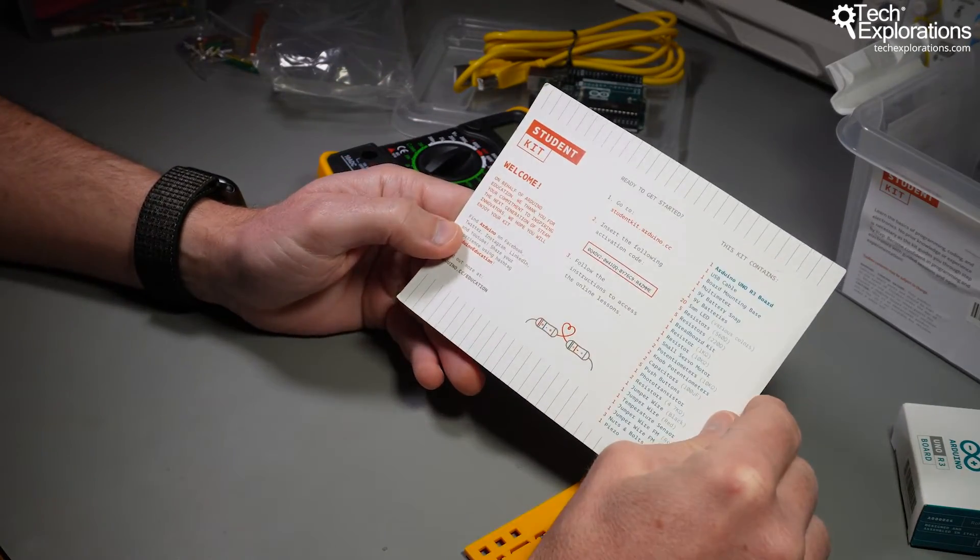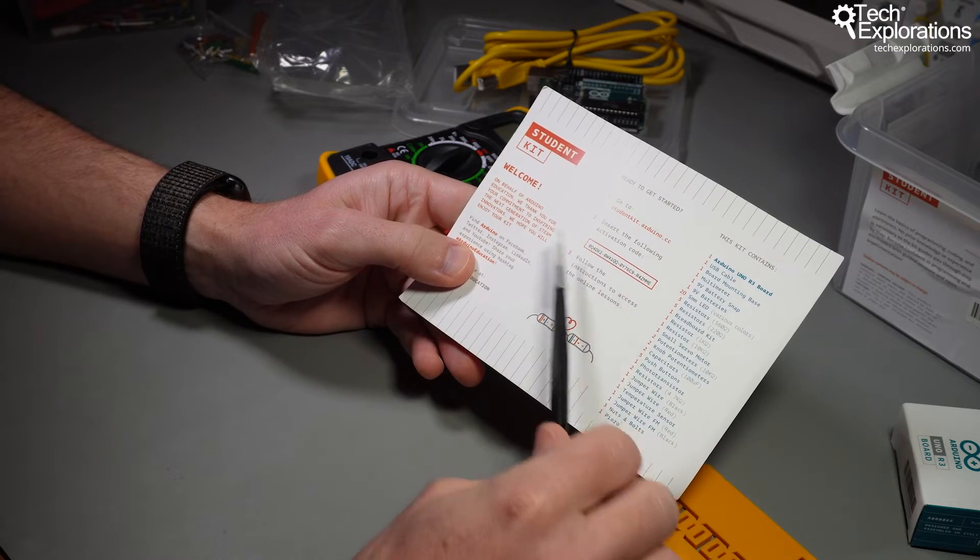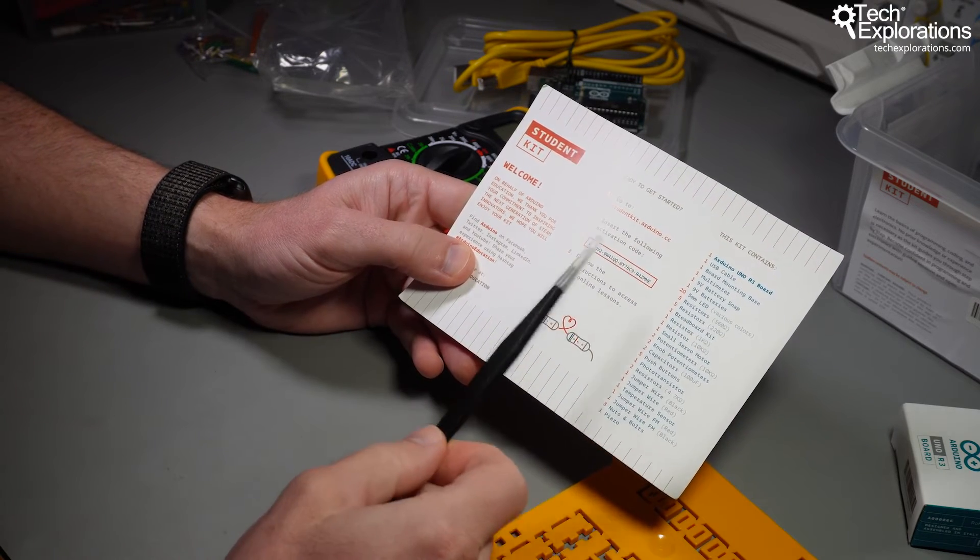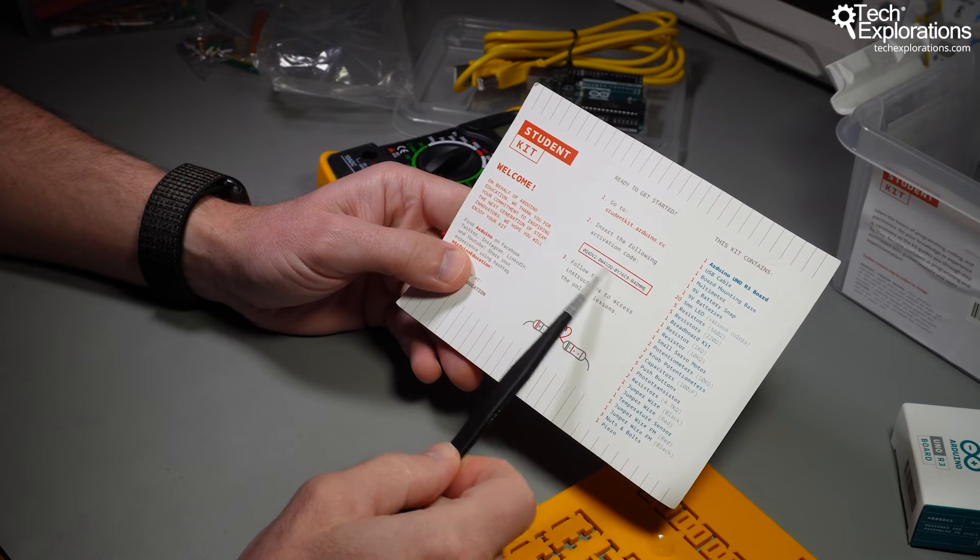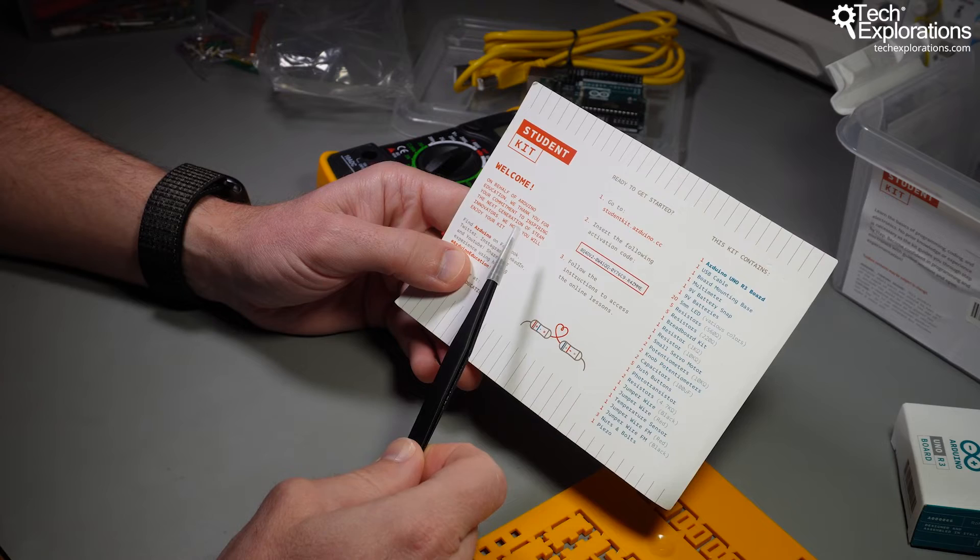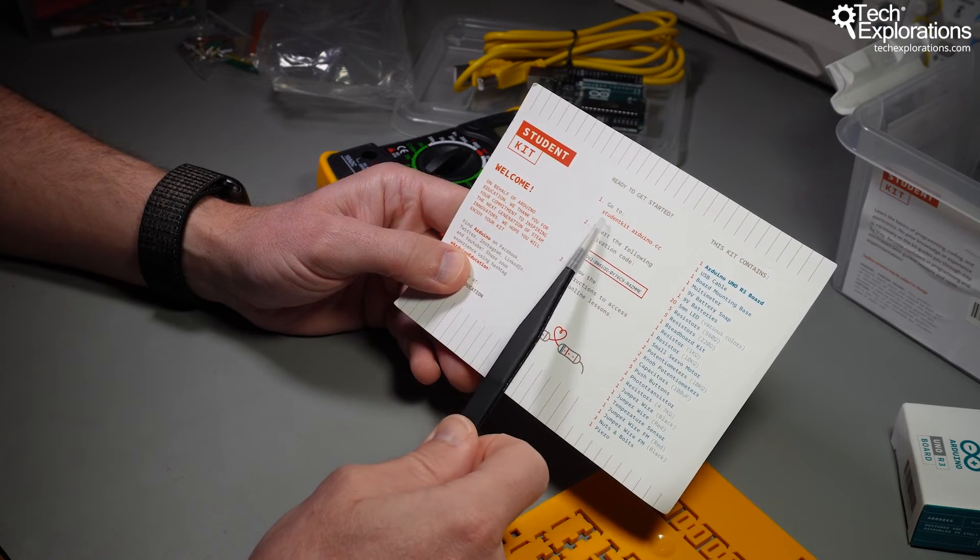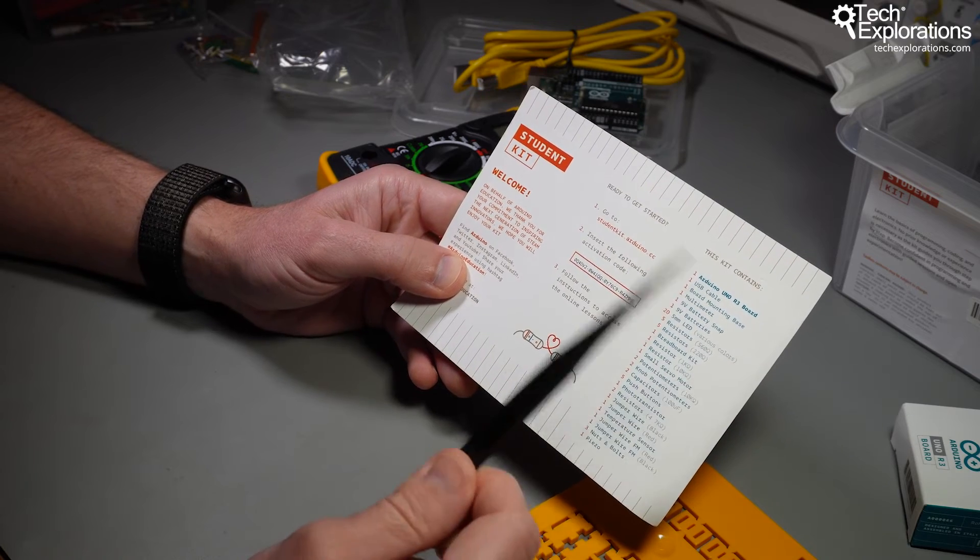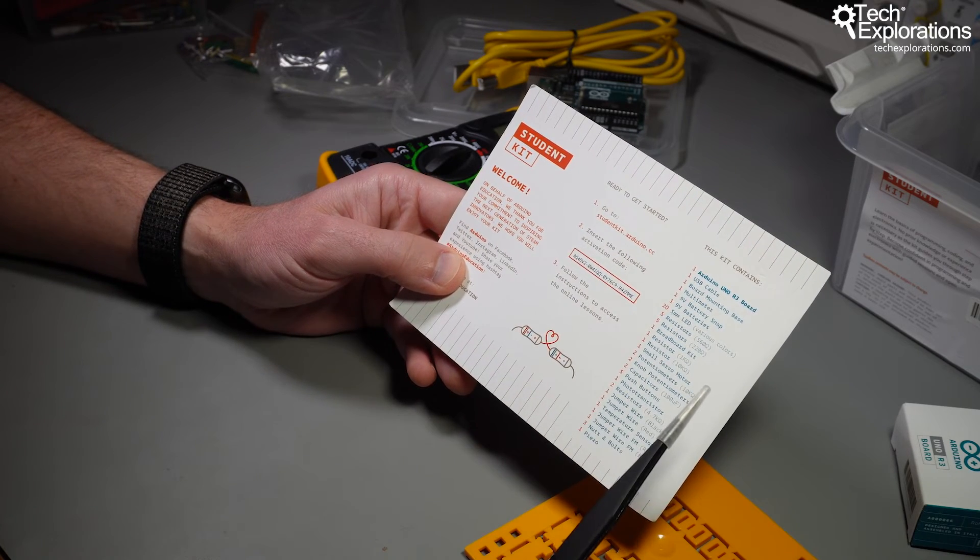Another thing to notice here is that when you purchase the student kit, in the piece of cardboard that is at the top of the kit with the kit contents, there is also a special code in here. It's an activation code for a small course that you can find at studentkit.arduino.cc. So along with the kit, you also get a small course.